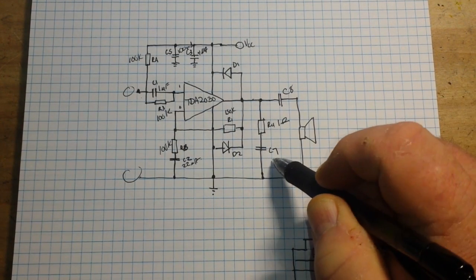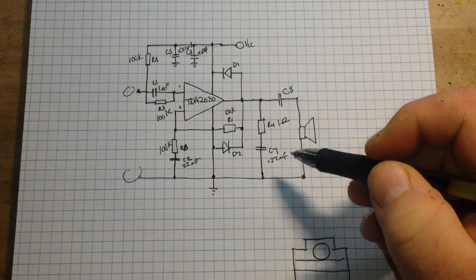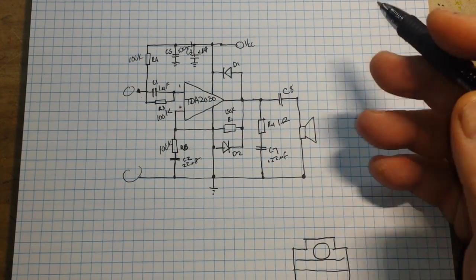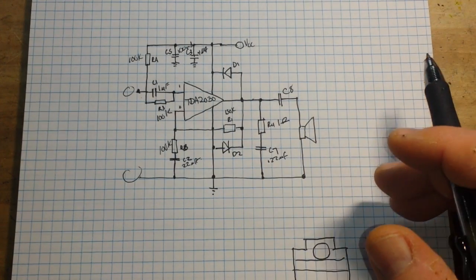And we come down here to C7, which is 0.22 microfarad, and C7 is used for frequency stability. It's just keeping our frequency stable. You change it, you can end up with oscillation.